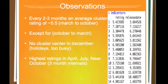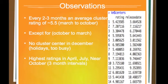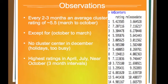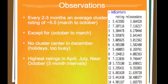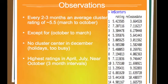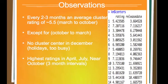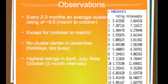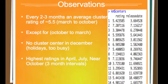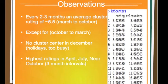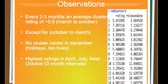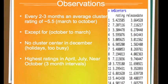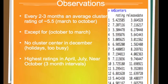You do notice the stops from October to March, which could be the holidays, so those typical movie goers are no longer going in that time frame. You notice that there's no real cluster in December either, so people could be too busy with the holidays to actually give ratings to movies. The highest ratings are in April, July, and near October — so in 3-month intervals again. This could be your typical person that goes once every 3 months.